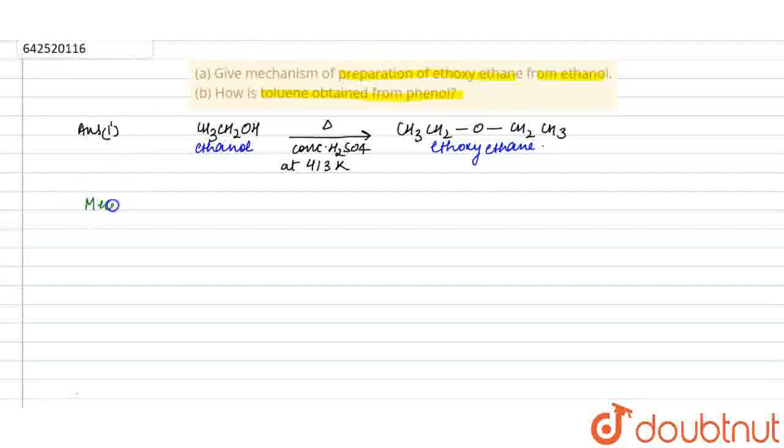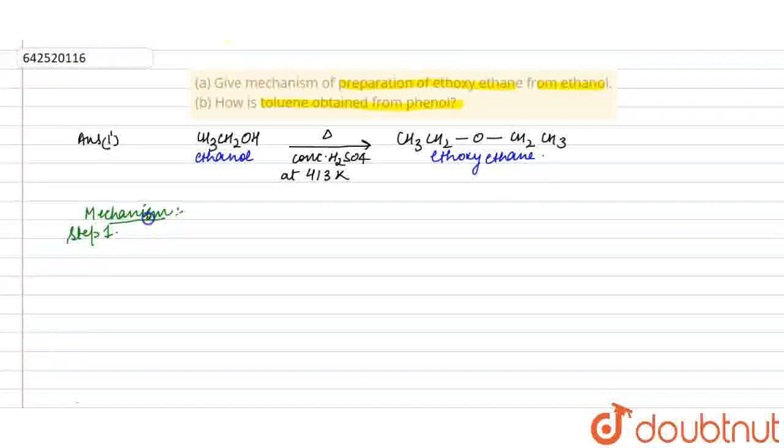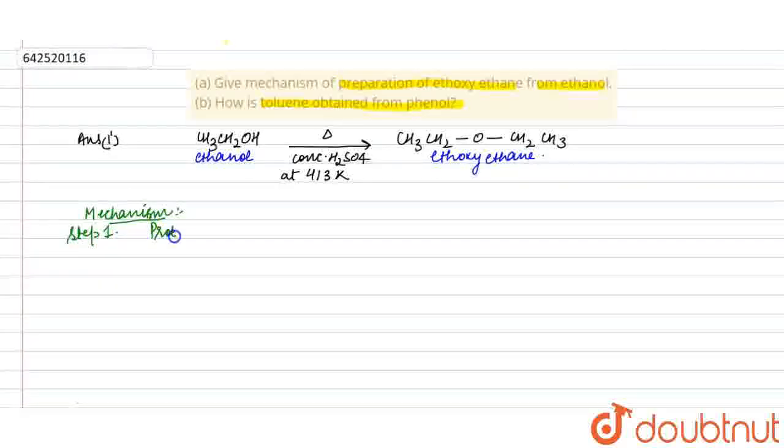The mechanism of this reaction is a step-by-step process. The first step is protonation of alcohol, which means addition of H-positive ion. This H-positive ion comes from the acidic medium.